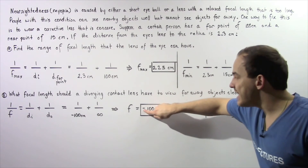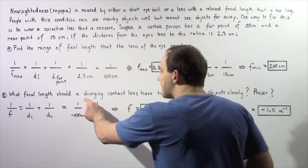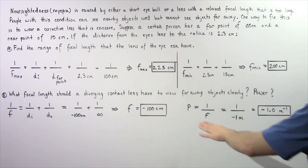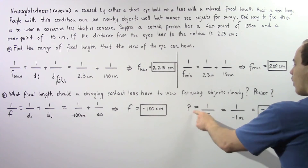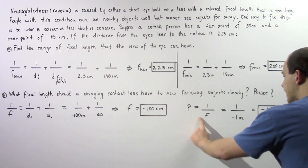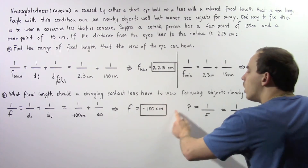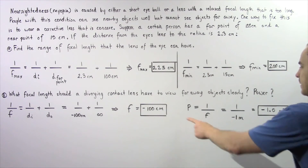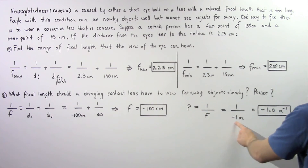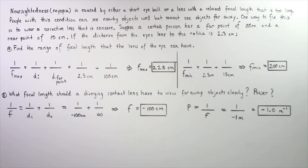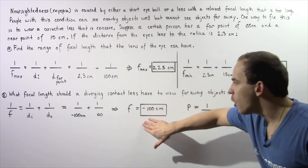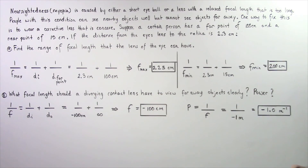The negative sign confirms we are dealing with a diverging lens, not a converging one. To find the power, we use P = 1/f, where f must be in meters. Since 100 centimeters equals 1 meter, P = 1/(−1 m) = −1.0 diopters. So the power of this contact lens is −1.0 diopters and its focal length is −100 centimeters.